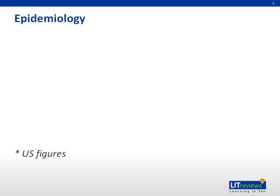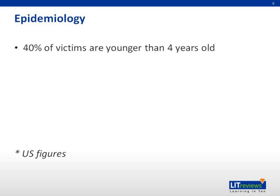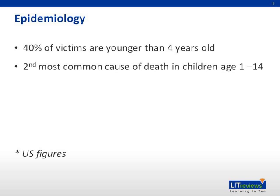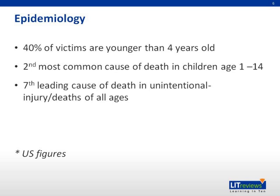So who suffers from this? A significant number of these cases will be children — 40% of victims are younger than 4 years old. Low- and middle-income countries have the highest risk of drowning, accounting for over 90% of such fatalities. It is the second most common cause of death in children aged 1 to 14, and the seventh leading cause of unintentional injury death of all ages.